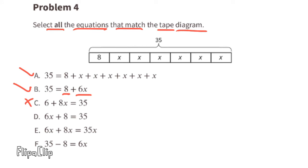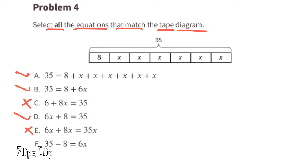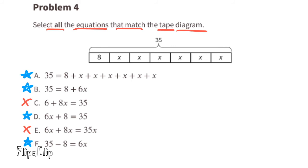C: 6 plus 8x equals 35 — that does not work, because 6 plus 8x isn't the same as 8 plus 6x. D: 6x plus 8 equals 35 — that's a perfect match, because it's the same as 8 plus 6x equals 35, since order doesn't matter. E: 6x plus 8x equals 35x — incorrect; the tape diagram equals 35, not 35x, and 8x is not the same as 8. F: 35 minus 8 equals 6x — a perfect match, because subtracting 8 from 35 leaves 6x. The equations that match are A, B, D, and F.